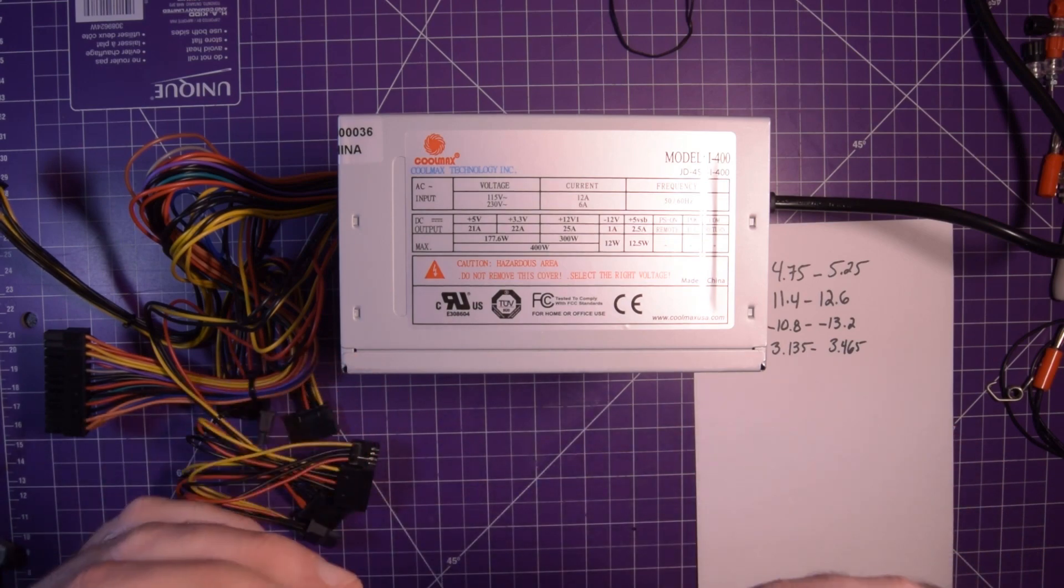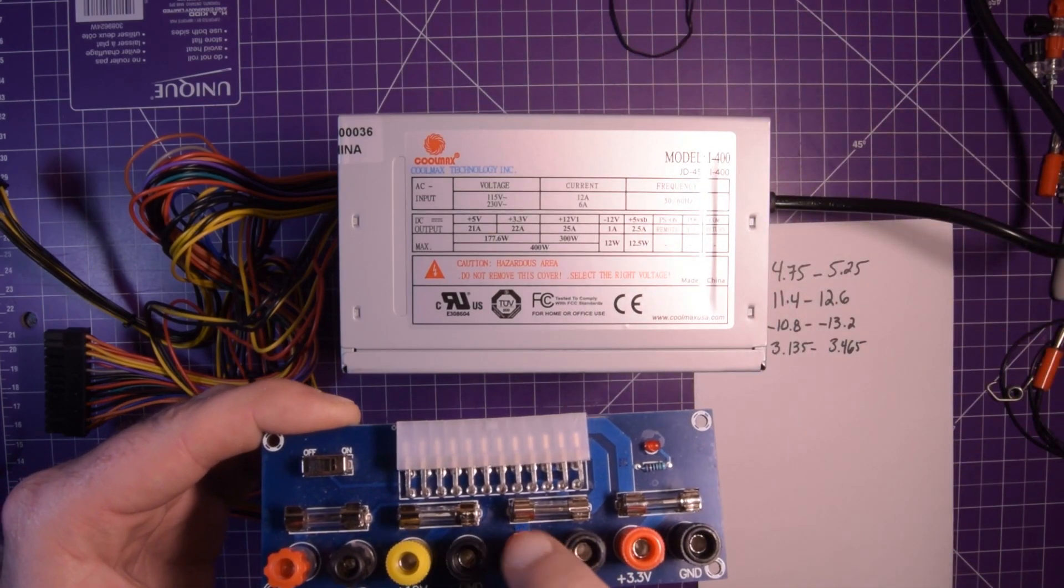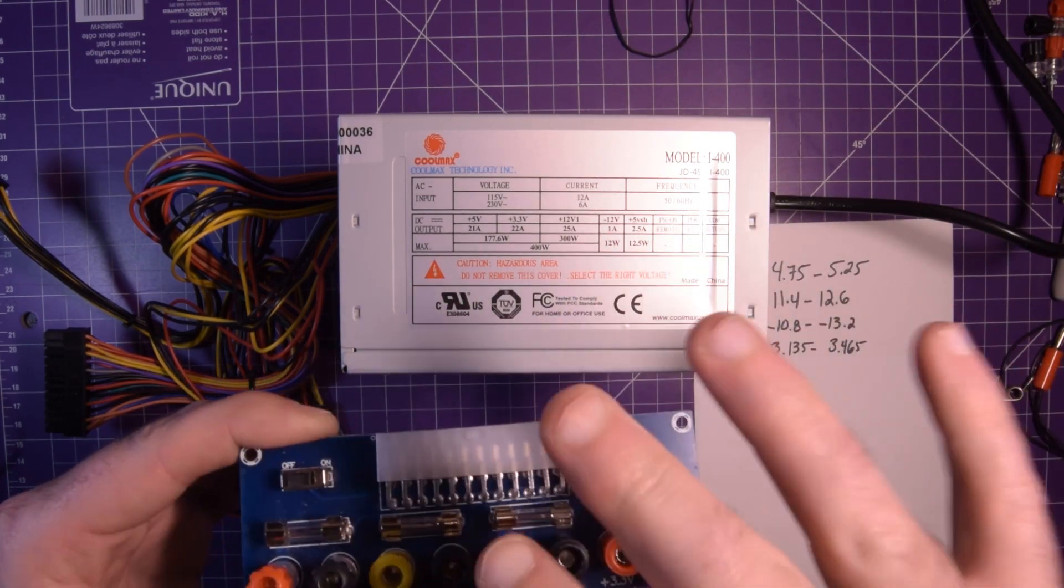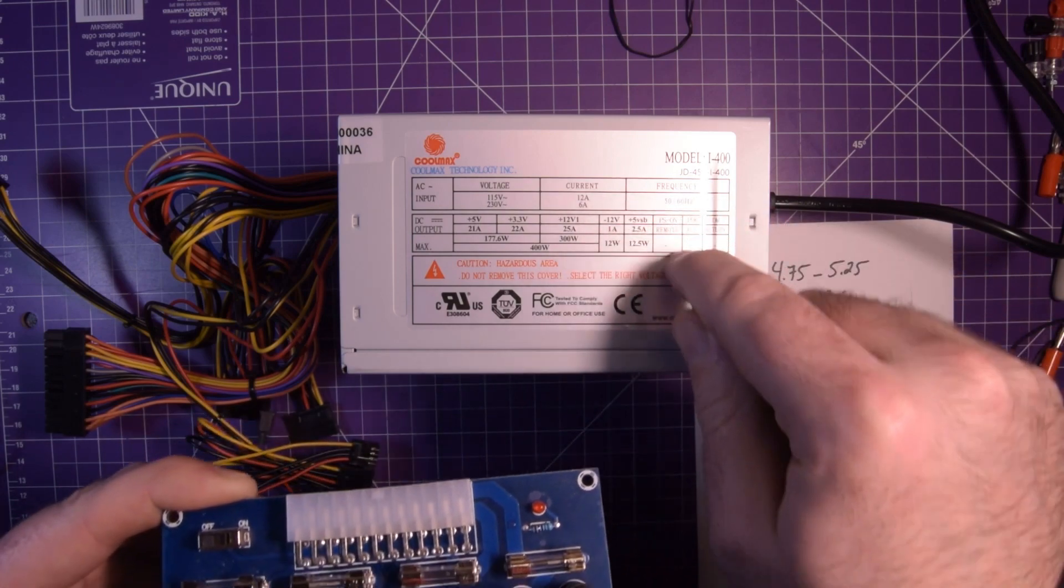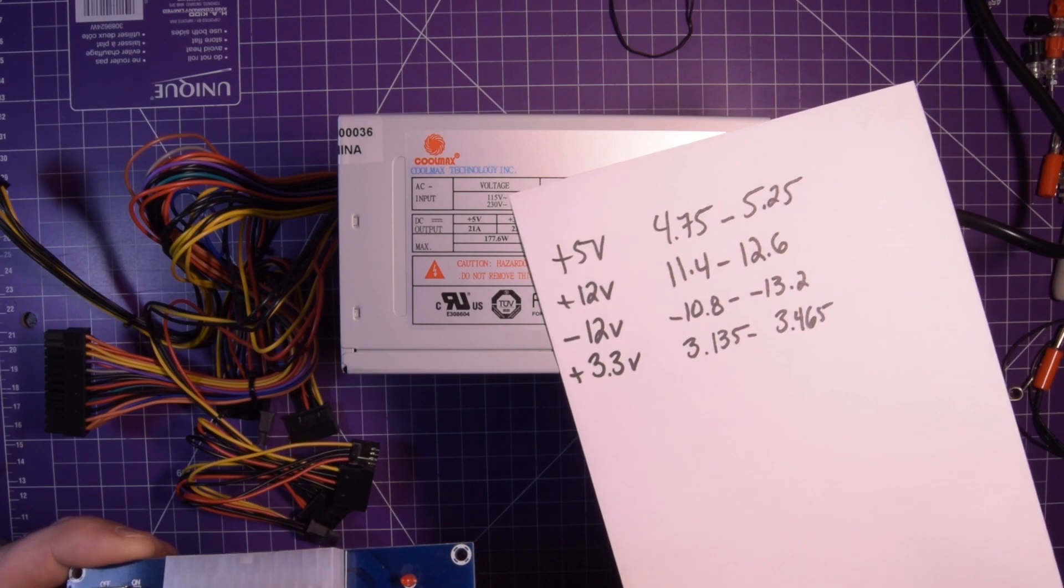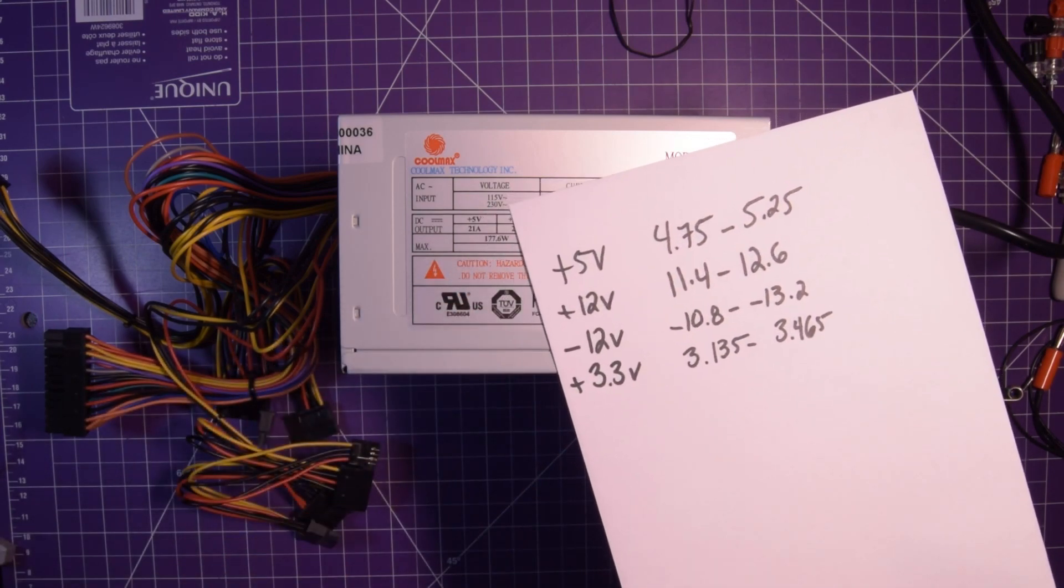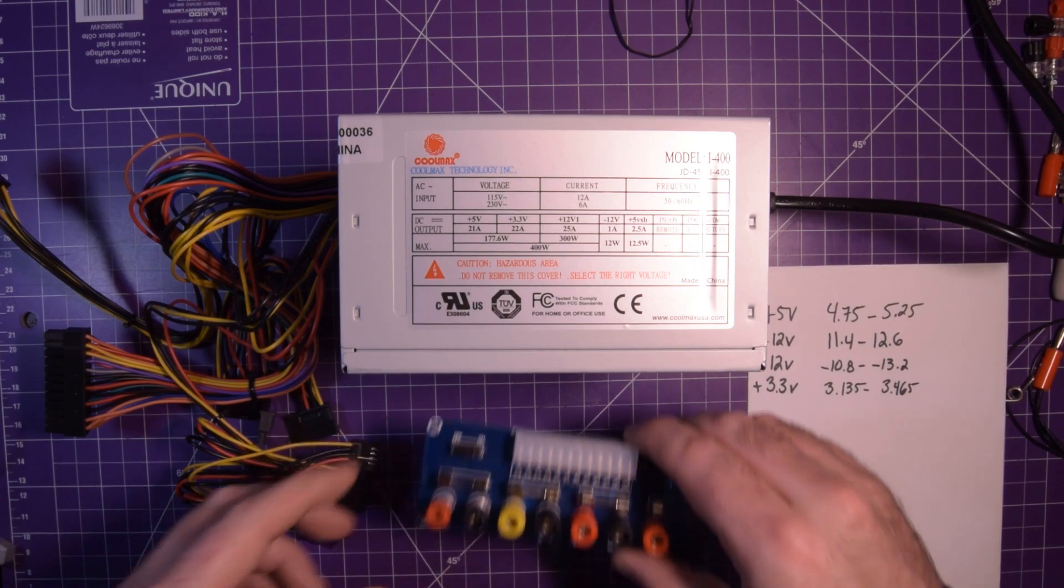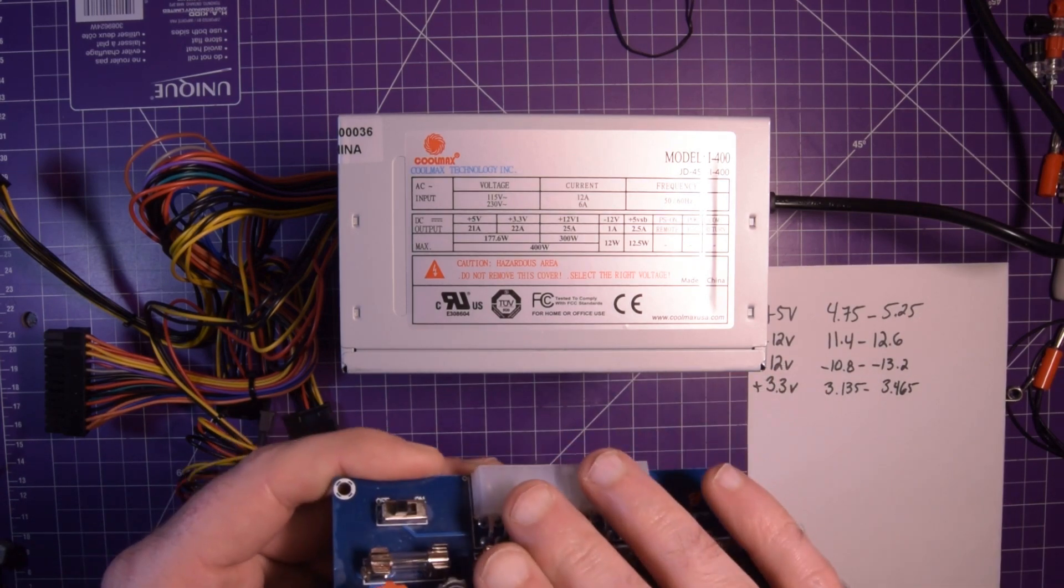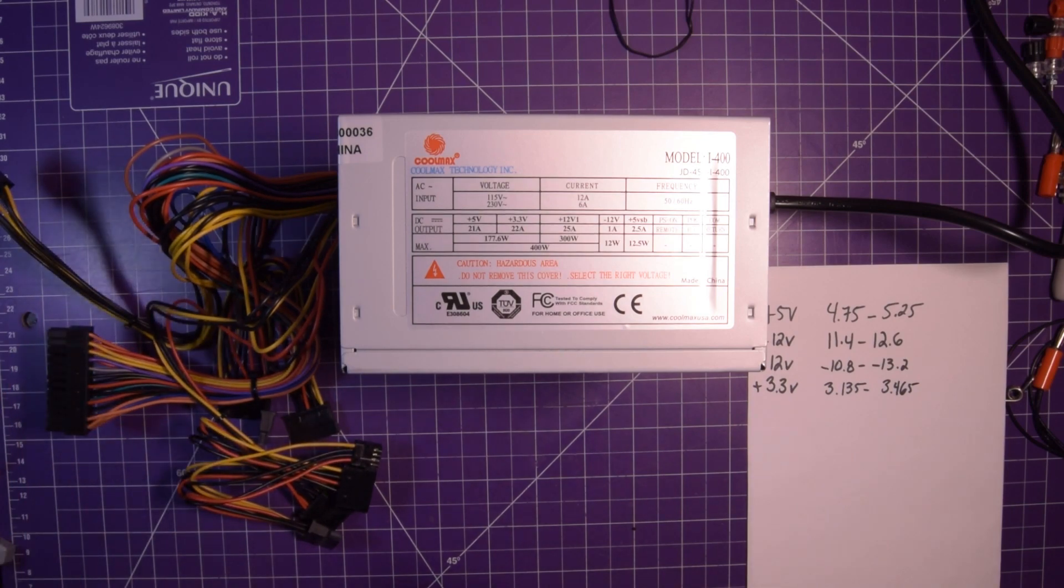But now the problem is, when I pull current from this thing, how do I know if it's actually this module dropping voltage or if it's this power supply? Well, I have the specs here for an ATX power supply, so the voltage ranges that are acceptable. And what we're going to do is, we're going to pull current from this device, but we're going to test from somewhere else.